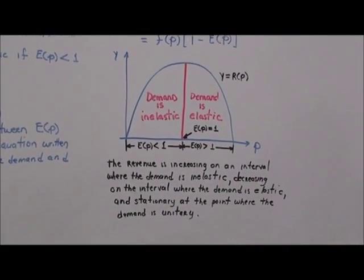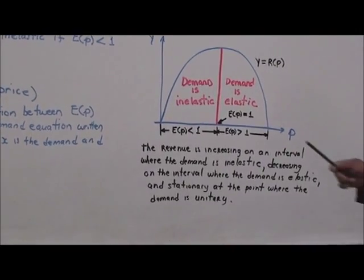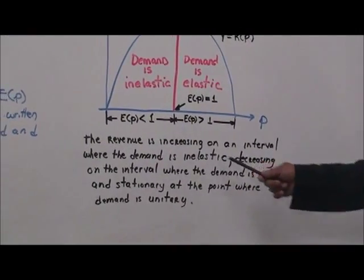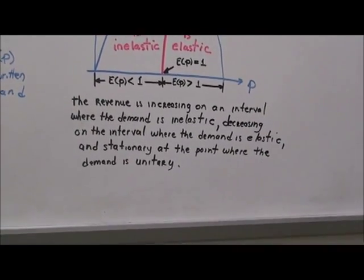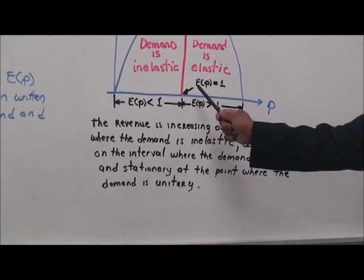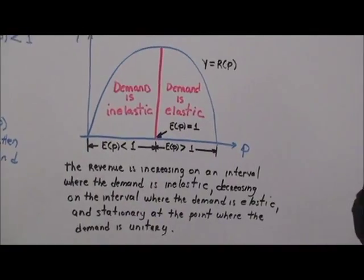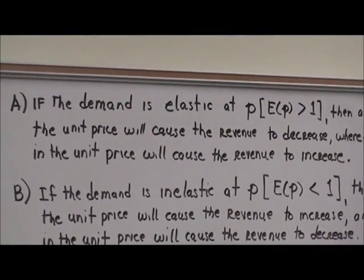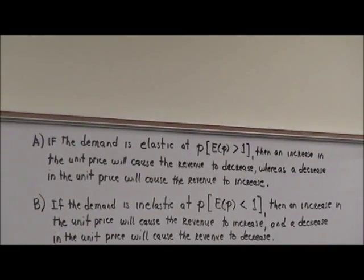The revenue is increasing on an interval where the demand is inelastic, decreasing on an interval where the demand is elastic, and stationary at a point where the demand is unitary — where E of P is equal to one. Let's go into a little detail about each of the terminology topics of this elastic demand function.